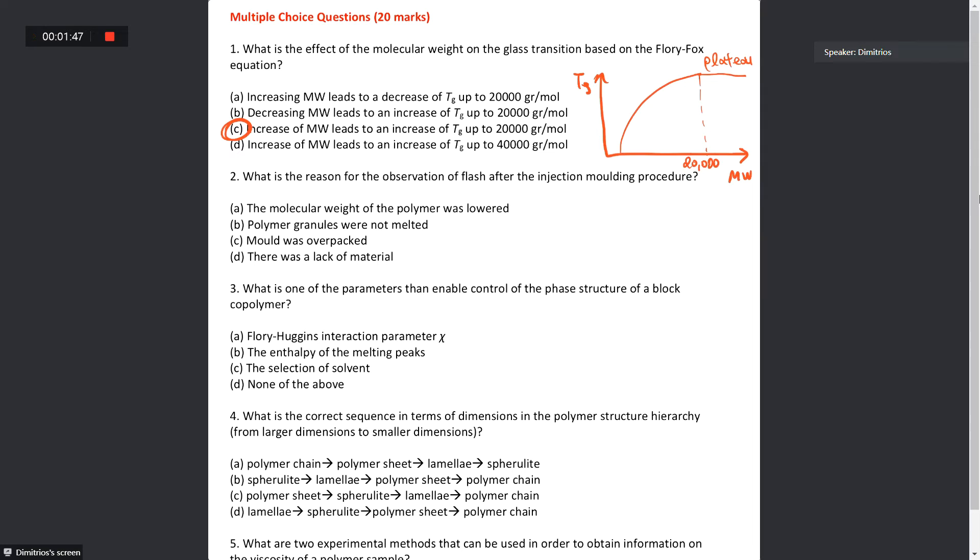Question number two: What is the reason for the observation of flash after the injection molding procedure? Obviously if we want to have a perfect product, we need to get rid of these extra materials. So the observation of flash is due to overpacking of the mold. Overpacked means that we have excess.